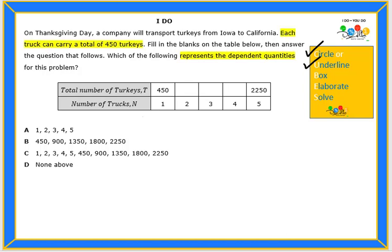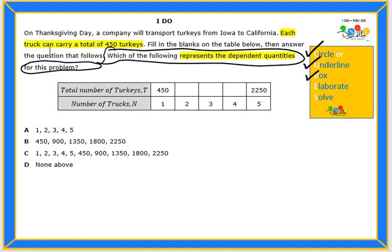Each truck can carry a total of 450 turkeys represents the dependent quantities. Then we box our question. Which of the following represents the dependent quantities for this problem?